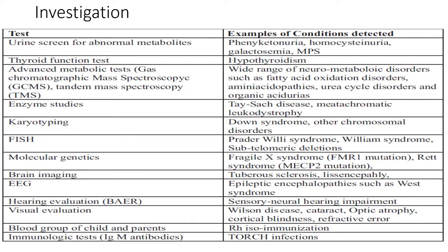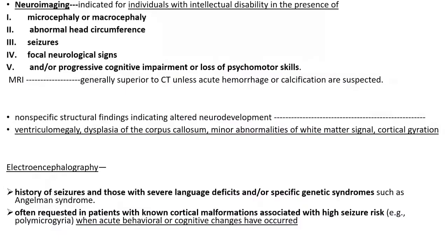Neuroimaging is indicated in intellectual disability only in cases of microcephaly or macrocephaly, abnormal head circumference, history of seizures, history of focal neurological signs, and progressive cognitive impairment or loss of psychomotor skills. MRI is superior to CT unless acute hemorrhage or calcification is suspected. Non-specific findings include ventriculomegaly, dysplasia of the corpus callosum, minor abnormalities of white matter signal, and cortical gyration abnormalities. EEG is indicated if there is history of seizures, severe language deficit, specific genetic syndromes including Angelman syndrome, known cortical malformation with high seizure risk, or acute behavioral or cognitive changes.